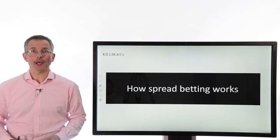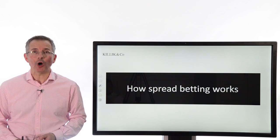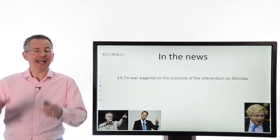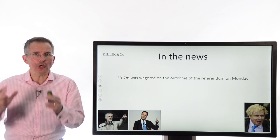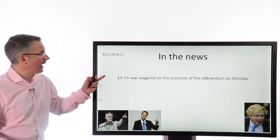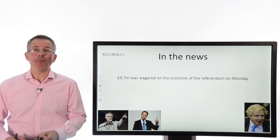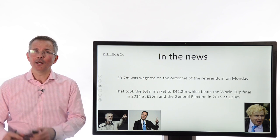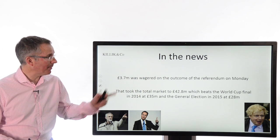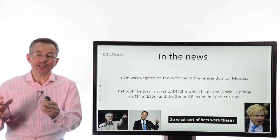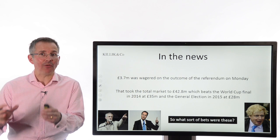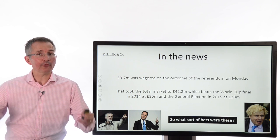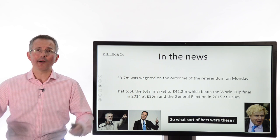Welcome to this Killick Explains finance video. This week: how spread betting works. You can hardly fail to notice there's been a referendum this week, and an awful lot of money was bet using this type of contract on the outcome. 3.7 million was put down on Monday alone, and that brought the total up to around 43 million, beating both the World Cup and the general election. The product a lot of people have used to bet on the outcome is called a spread bet — so it's worth knowing how these work, and also worth knowing where else you can apply them.